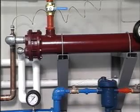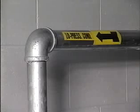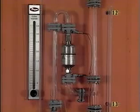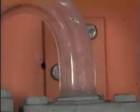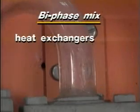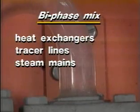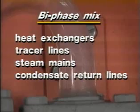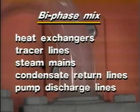Water hammer can occur in any water supply line, hot or cold, and its effects can be even more pronounced in bi-phase systems. Bi-phase systems contain both condensate and live or flash steam in the same space. Heat exchangers, tracer lines, steam mains, condensate return lines, and in some cases pump discharge lines may contain a bi-phase mix.